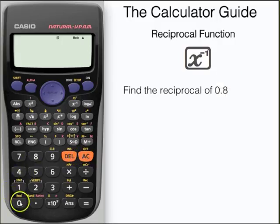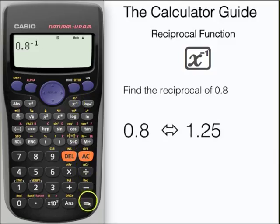You can also find the reciprocal of decimals as well as fractions. Let's find the reciprocal of 0.8. Input 0.8 and press the reciprocal button and equals. Automatically the calculator displays as a fraction. If we press the SD button, we can now have it in decimal form: 1.25.